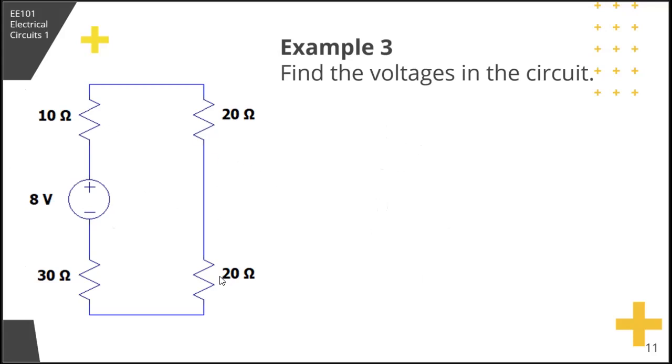This is similar to earlier, find the voltages in the circuit. Remember the generalization for voltage division: if you have N number of resistors, the voltage drop across any particular resistor is equal to the resistance of that particular resistor over the sum of all the resistors times the source voltage or the voltage across the series resistors.